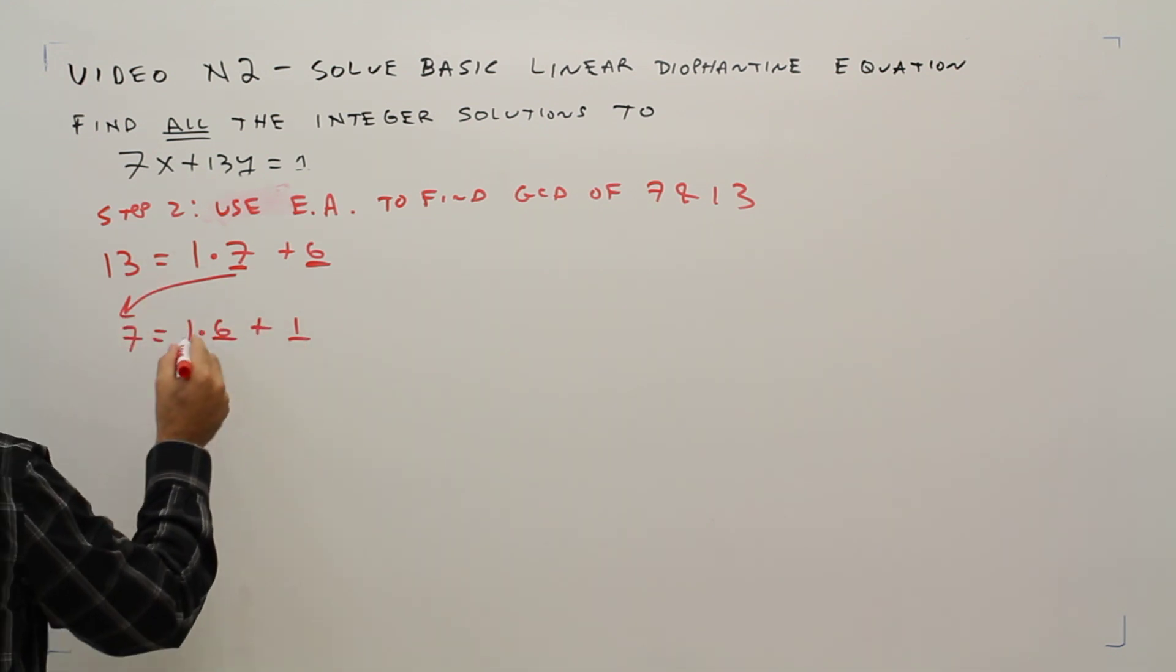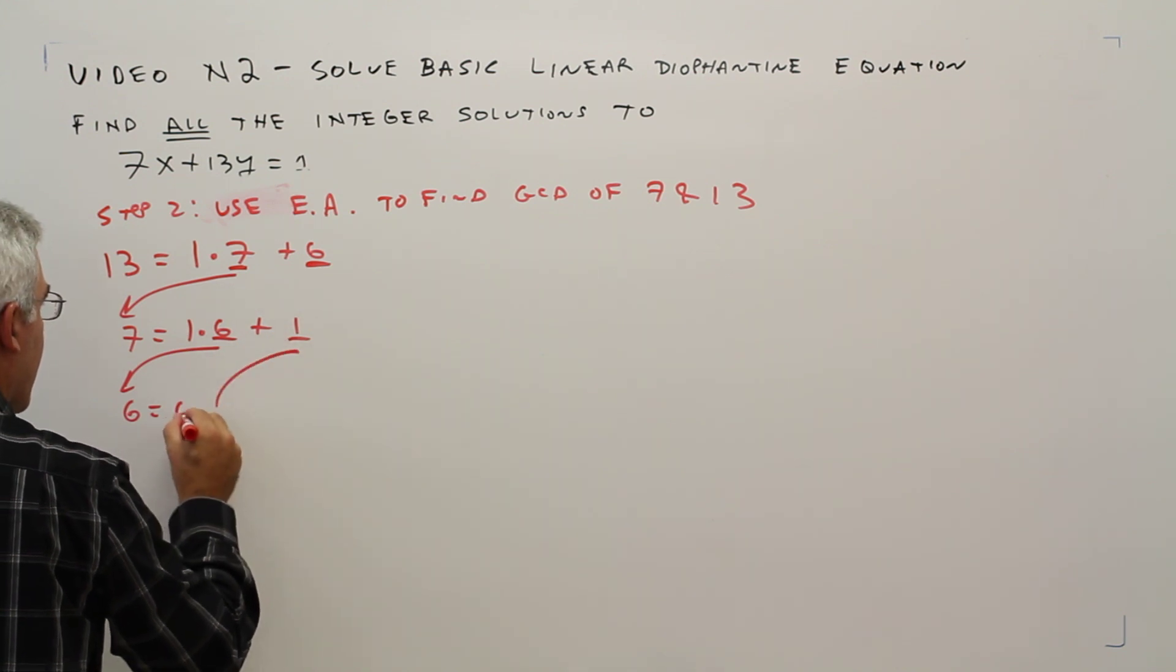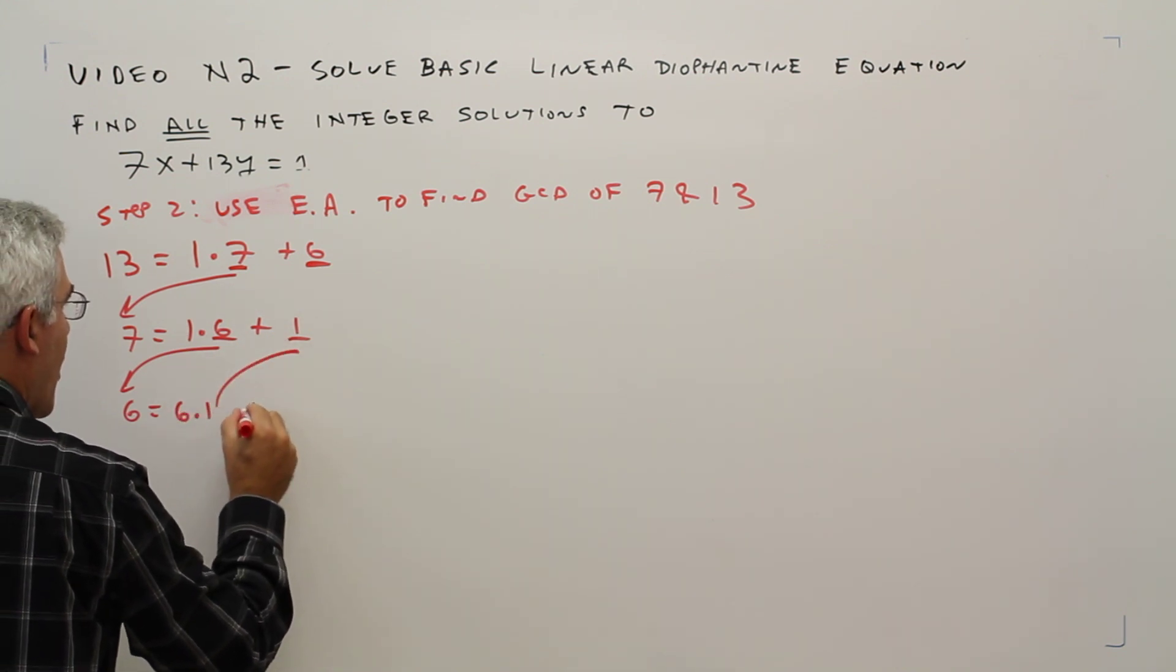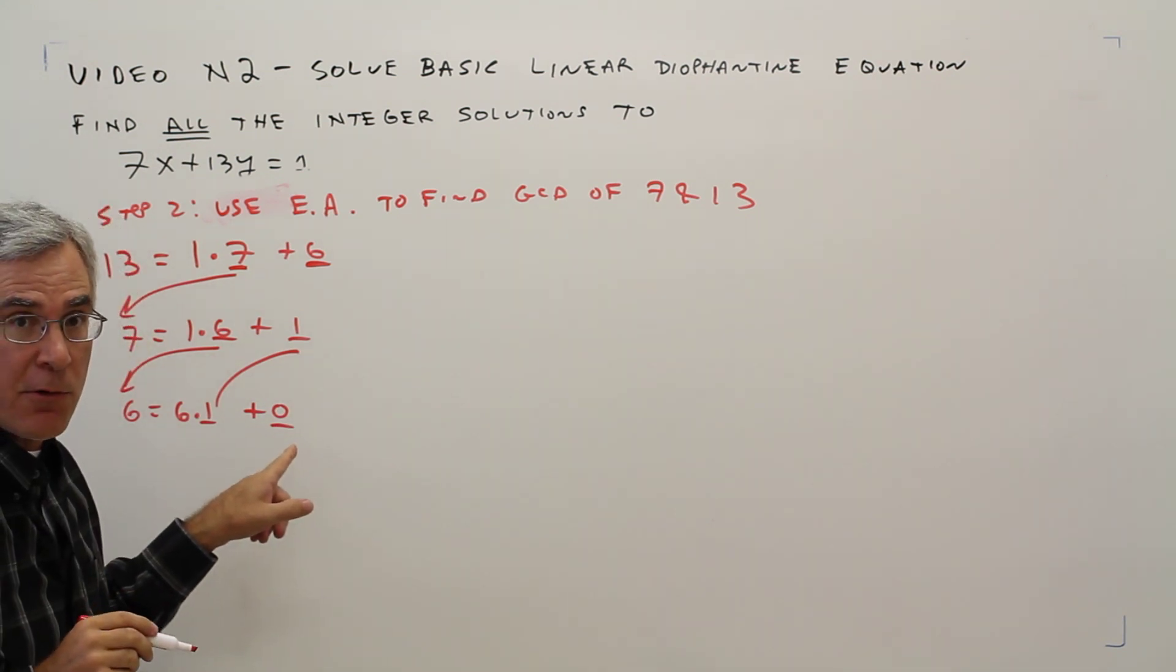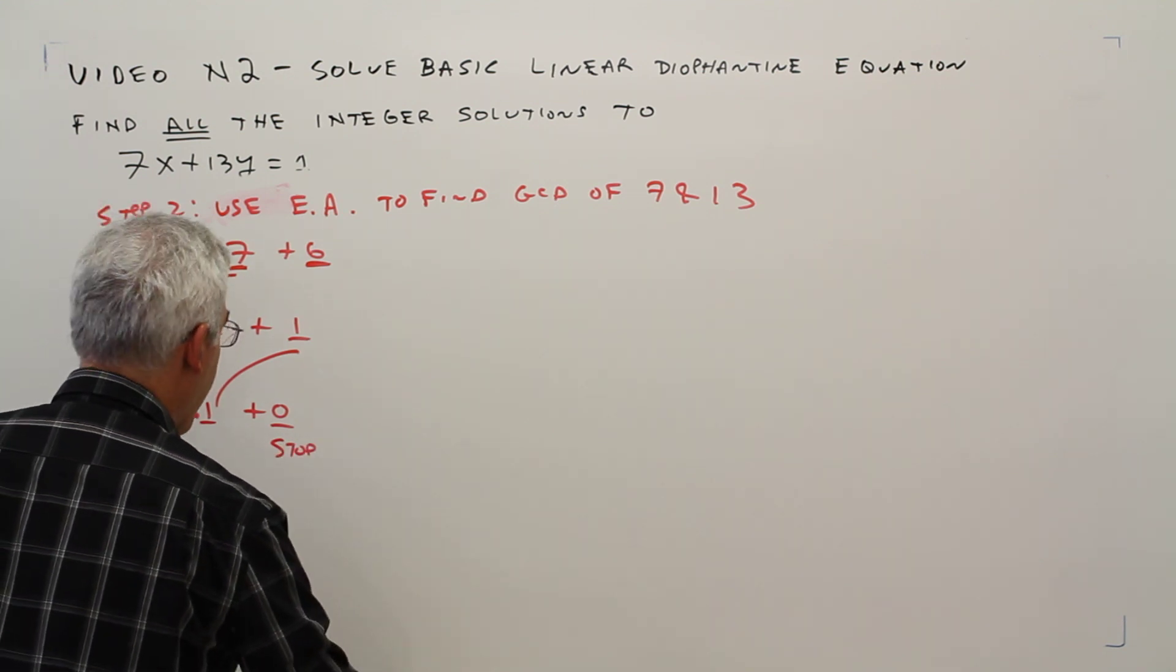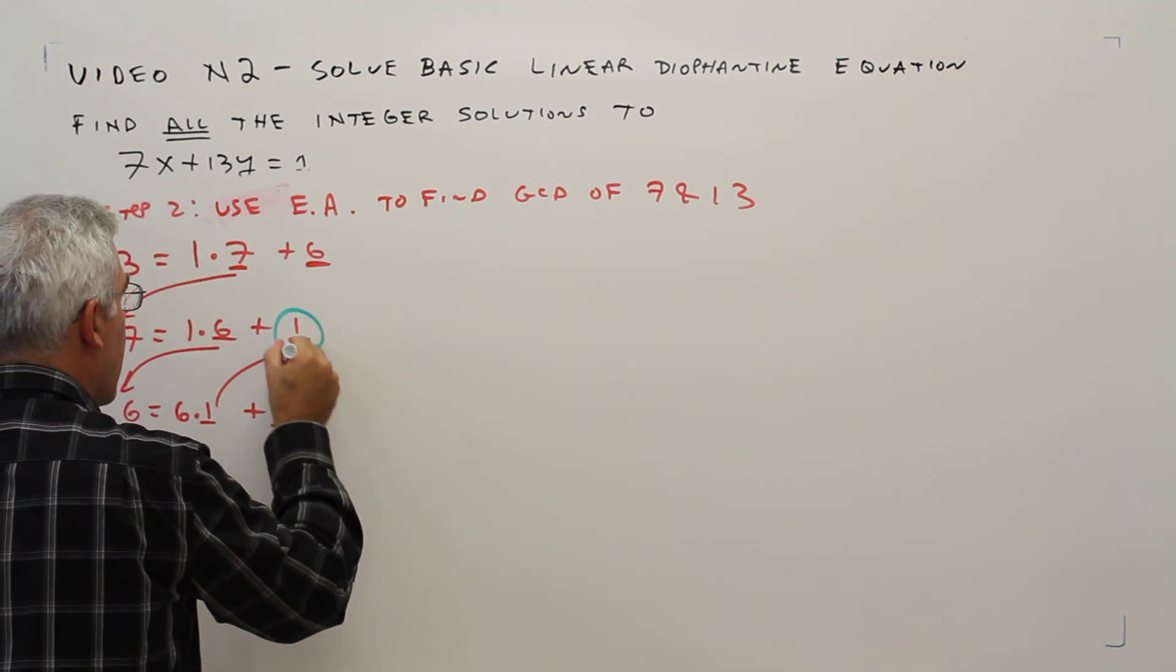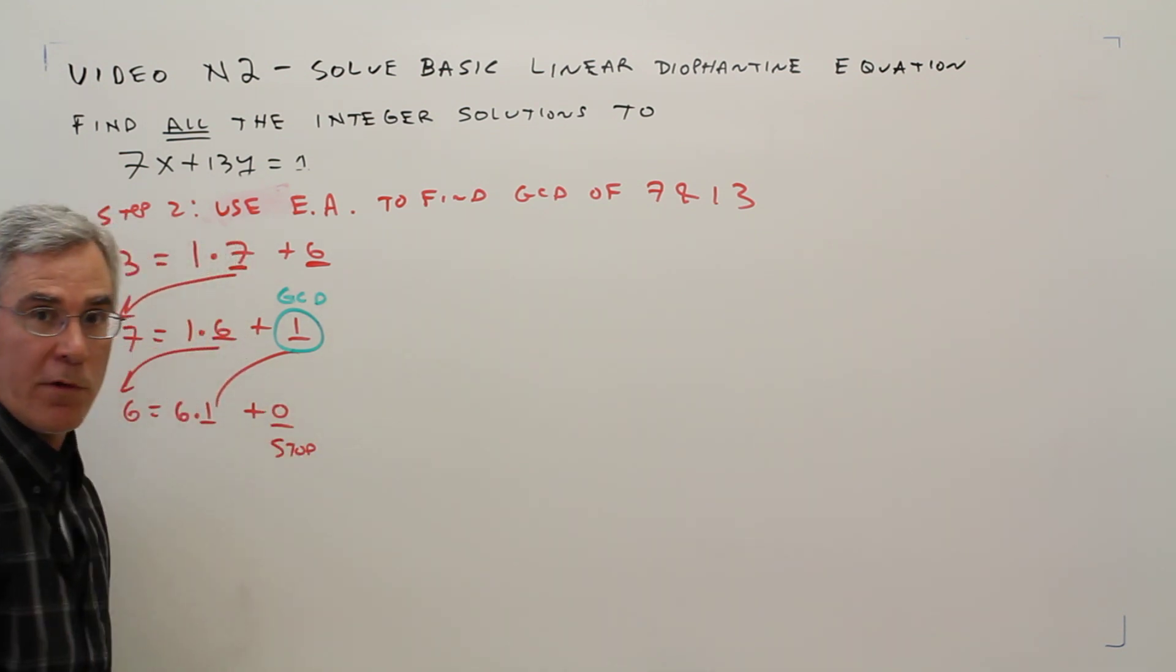Did I bring them over again? 6 equals 6 times 1 plus 0. So once I get a 0 there, I stop. And just to emphasize, the step above the 0 was the GCD.